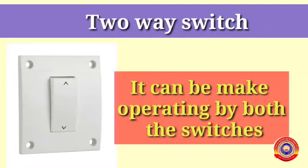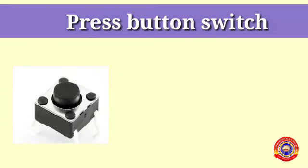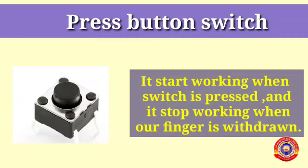It stops producing sound when the finger is withdrawn. Two-way switch: a two-way switch can be made to work and made to stop functioning by operating both the switches. These switches are generally used in bedrooms — one two-way switch is fixed on the switchboard and the other is connected to the same appliance and fixed near the bed. Press button switch: it is the same as the bell switch — it starts working when pressed and stops when the finger is withdrawn.